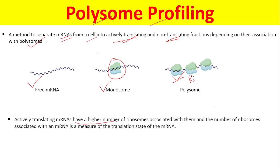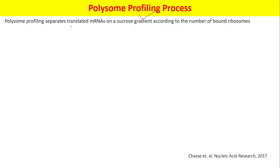Polysome profiling is a method used to separate actively translating and non-translating fractions, because actively translating mRNAs have a higher number of ribosomes associated with them. The number of ribosomes associated with an mRNA is a measure of the translation state of that mRNA. The polysome profiling process separates translated mRNA on a sucrose gradient according to the number of bound ribosomes.